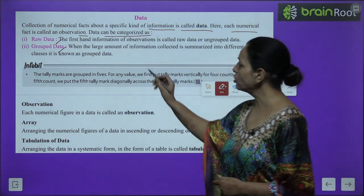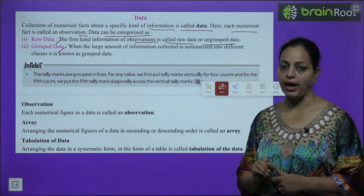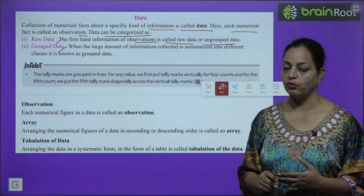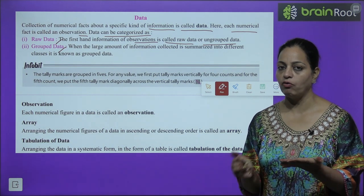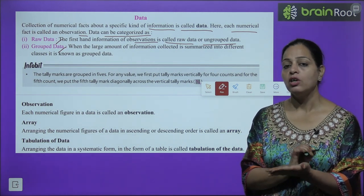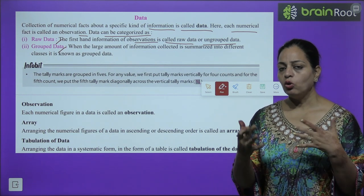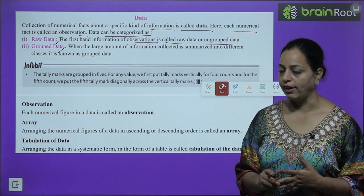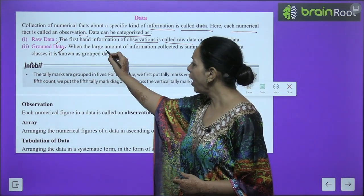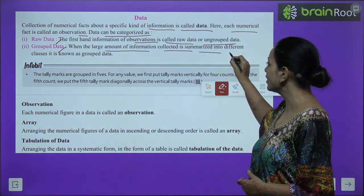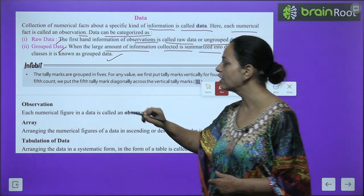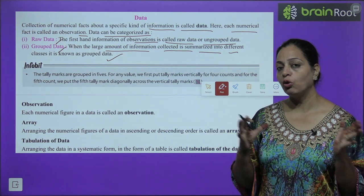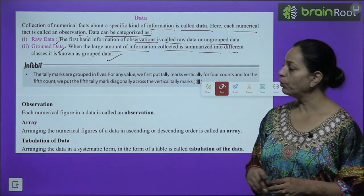Data can be categorized as raw data or grouped data. The first-hand information or observation is called raw data or ungrouped data — suppose I go to a class and write down the marks of each child randomly; that is raw data. When a large amount of information collected is summarized into different classes, it is known as grouped data. When data is very large in number, we summarize it and put it into groups — that becomes grouped data.